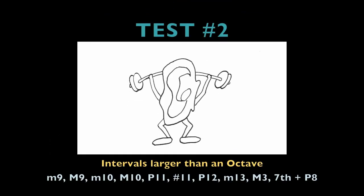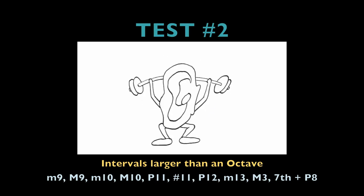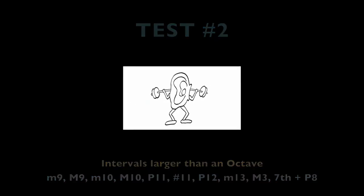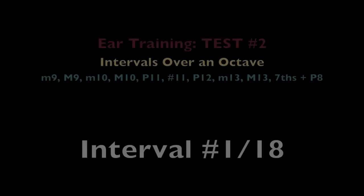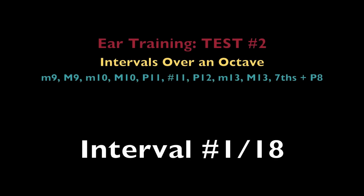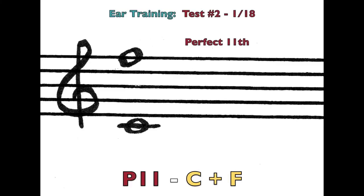Test number 2. Chromatic intervals larger than an octave. The C major scale. [scale plays] Perfect 11th. The notes C and F.